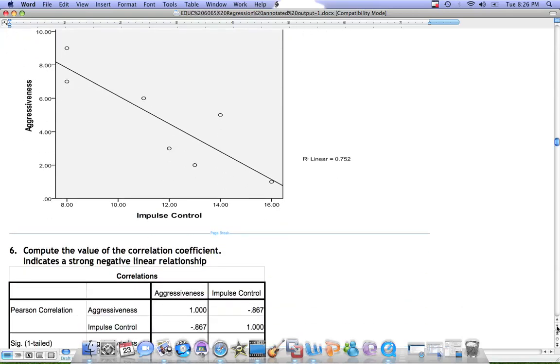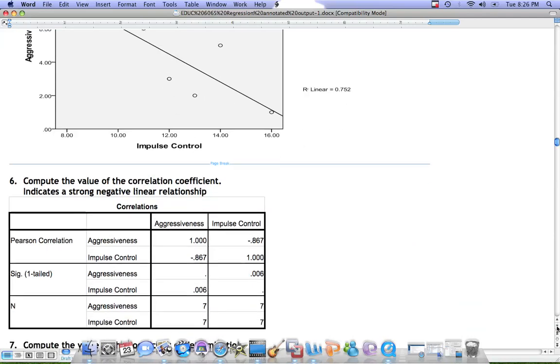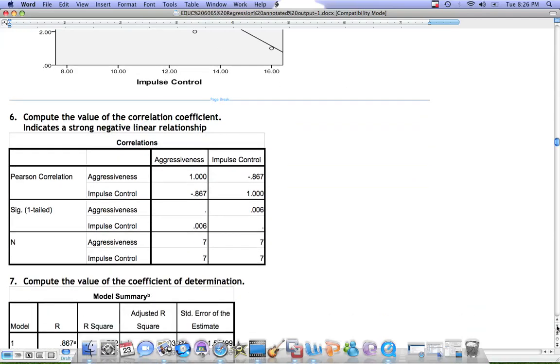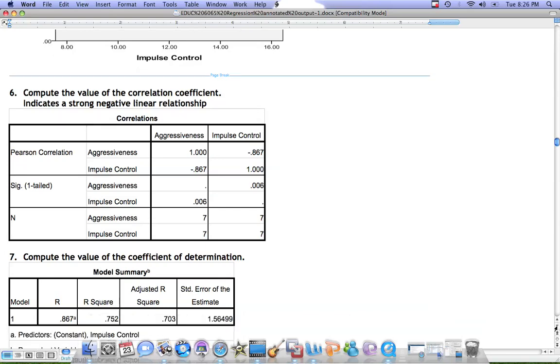In order to determine if we can use that regression equation to predict the value of aggressiveness from impulse control, we need to look at a few pieces of information. One is the correlation coefficient. This table shows the Pearson correlation coefficient for the correlation between impulse control and aggressiveness, and we see that the correlation is negative 0.867, again indicating a strong negative relationship.